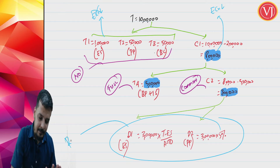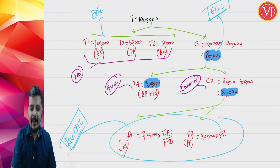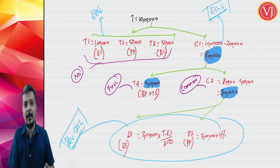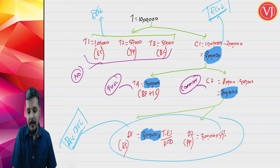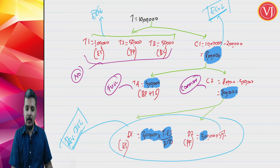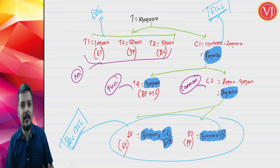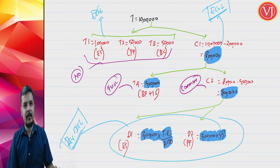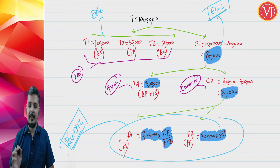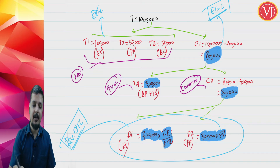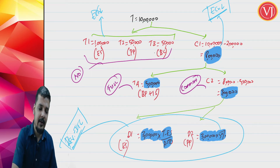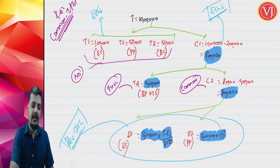D1 and D2 are reversed from the ITC in the electronic credit ledger. Initially 8 lakhs was credited; from the 3 lakhs common portion, the reversal amount is reduced. D1 always applies; D2 applies only when personal use data is provided. This entire working under Rule 42 for common inputs and input services is done on a month-on-month basis.